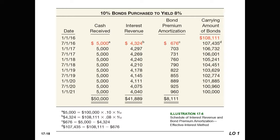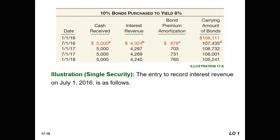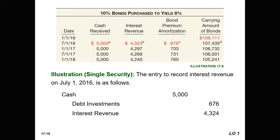We remove that from the carrying amount of the bonds, lowering it to $107,435, and continue this process for each period using the effective interest rate method. At maturity on 1-1-2021, we'll have a carrying amount of $100,000 — the amount we will receive at maturity. Using the 7-1-2016 bond payment, we receive cash of $5,000, reduce our debt investments by $676, and recognize interest revenue of $4,324.